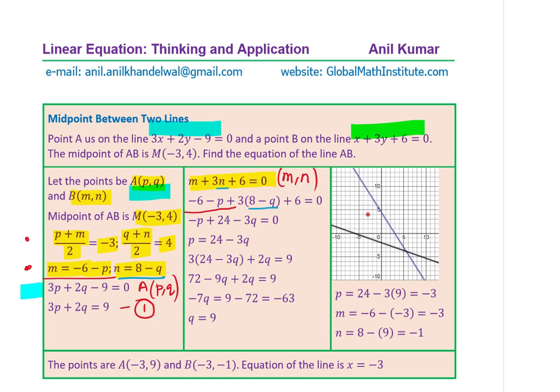Once you do that, you get a simplified form as P equals 24 minus 3Q. So let me call this as our equation number 2.